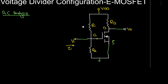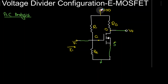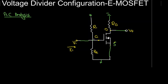We now have a simplified version of the voltage divider configuration. The DC sources will also be grounded. Resistances R1 and R2 are each connected to ground on one side, and on the other side they are both connected to the gate terminal — so R1 and R2 are in parallel with each other.